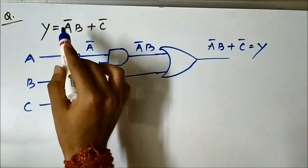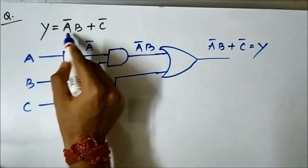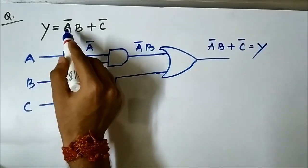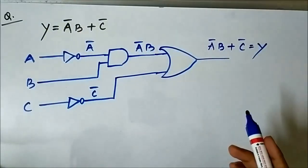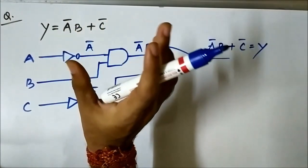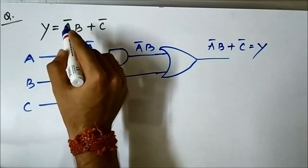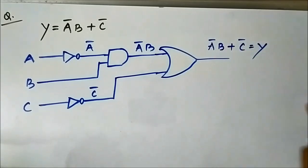The same steps apply every time: first determine what logic gates are required, then create the individual terms present in the expression, then combine them to get the final expression. Here we have solved another simple logic expression using digital logic gates and obtained the output.